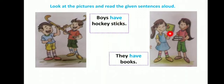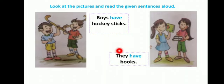Here also two girls हैं। दोनों plural form में हैं, means more than one है। So उनके लिए they use होगा। And they के साथ भी have use होगा। So they have books.